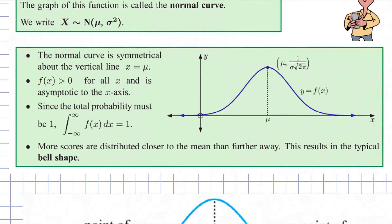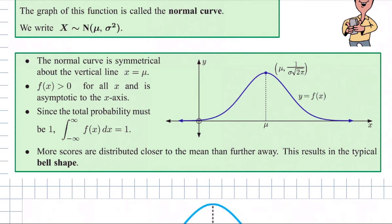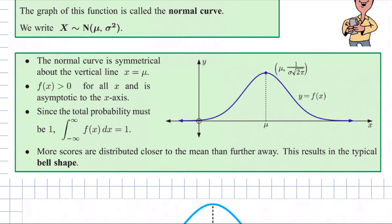The important properties: first, it's symmetrical — it dips away in the negative direction in the same way as it dips in the positive direction, and it's symmetrical about the line at the mean. It is positive the whole time, above the x-axis. And if we were to find the integral from minus infinity to infinity of this function, the answer is equal to one. You are not going to have to find that integral — just take it as given that the answer is one.